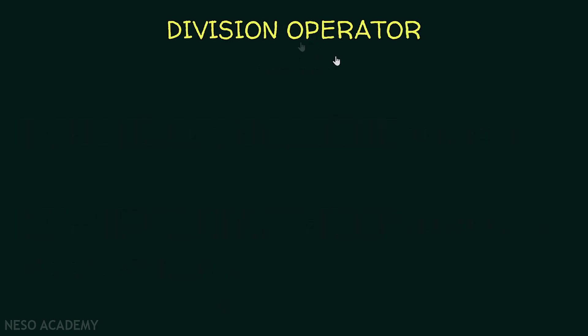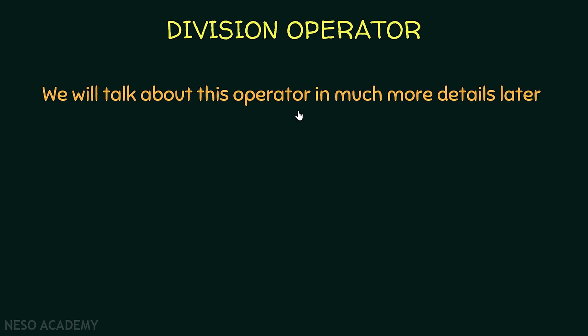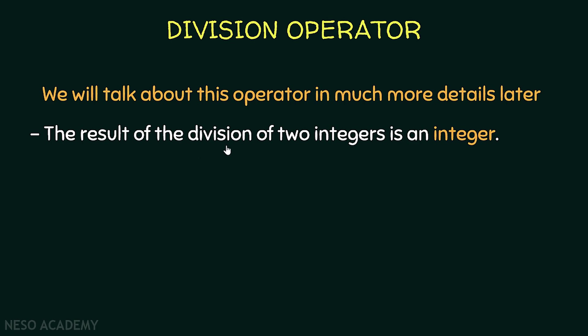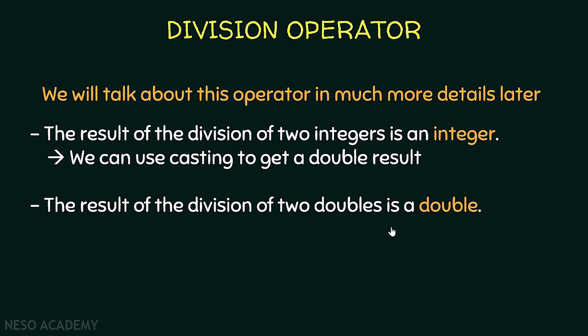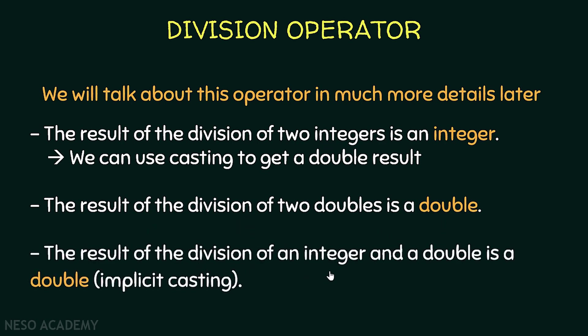Let me tell you more about the division operator — we will talk about it in much more detail later. First, the result of the division of two integers is an integer, and we can use casting to get a double result — we will talk about casting later. Also, the result of the division of two doubles is a double. And the result of division of an integer and a double is a double, because of implicit casting — we will talk about this later. The key idea: when we divide integers we get an integer; when we divide floating point numbers we get a floating point number.